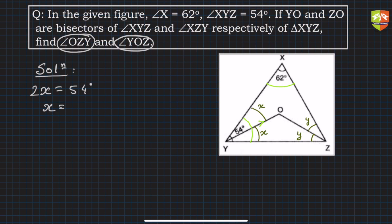Now if I write angle XYZ plus angle YZX plus angle YXZ, all put together is 180 degrees. And why is this? This is because of angle sum property of a triangle.